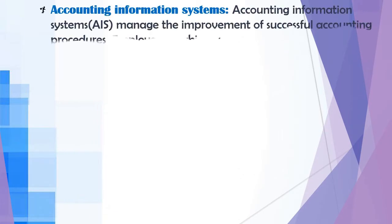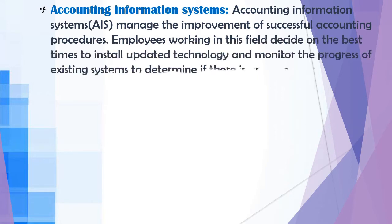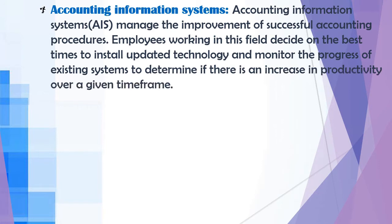Accounting information systems: this branch manages the improvement of successful accounting procedures. Employees in this field decide on the best time to install updated technology and monitor the progress of existing systems to determine if there is an increase in productivity over a given time frame. In modern times, accounting is done technologically with the help of computers.